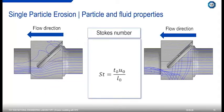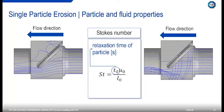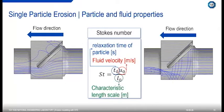A helpful way to characterise this is through the use of the non-dimensional Stokes number. This characterises the behaviour of a particle suspended in a fluid flow and is defined as the ratio of the characteristic time of the particle — the relaxation time — times its fluid velocity against its characteristic length scale, such as its diameter. Typically, when we have a Stokes number less than one, the particle will follow the flow. Whereas with larger Stokes numbers, it has high inertia and will typically detach from the flow and impact the wall. This is a useful tool when thinking about your actual design and whether erosion may or may not be a problem.